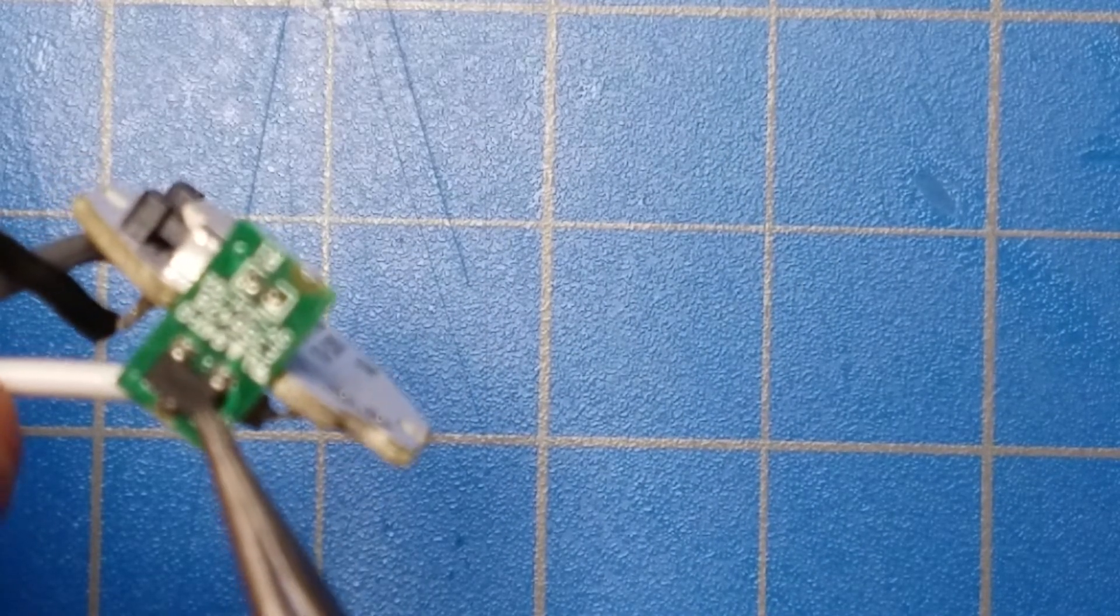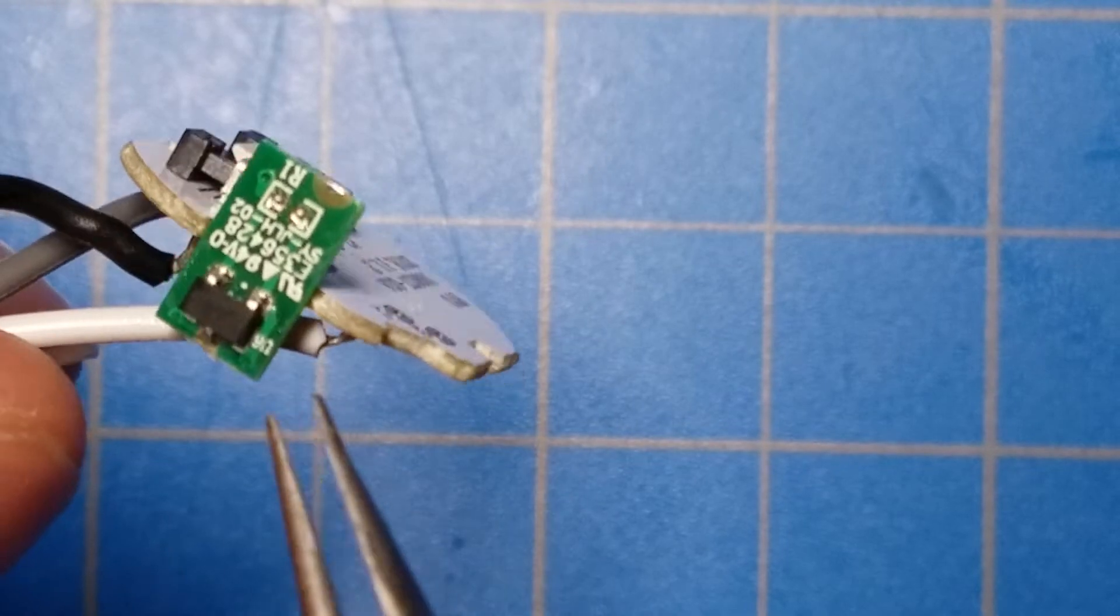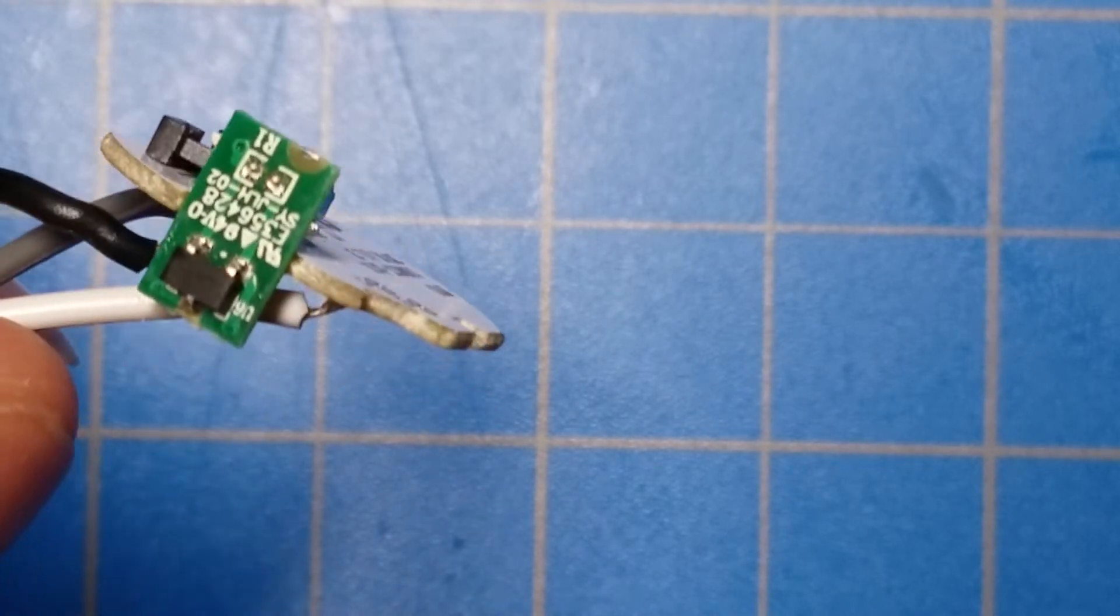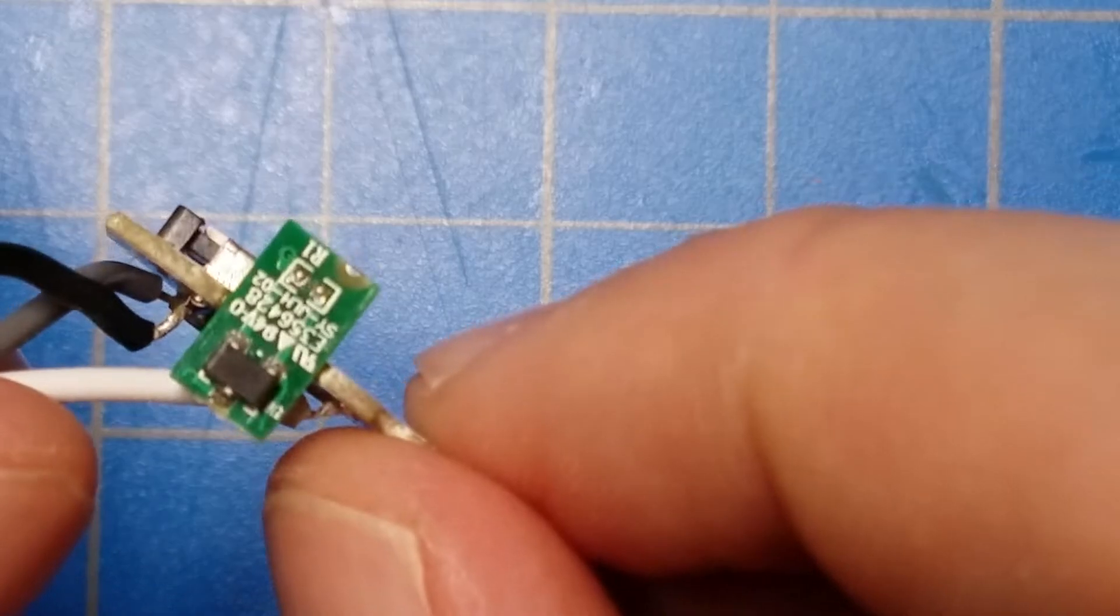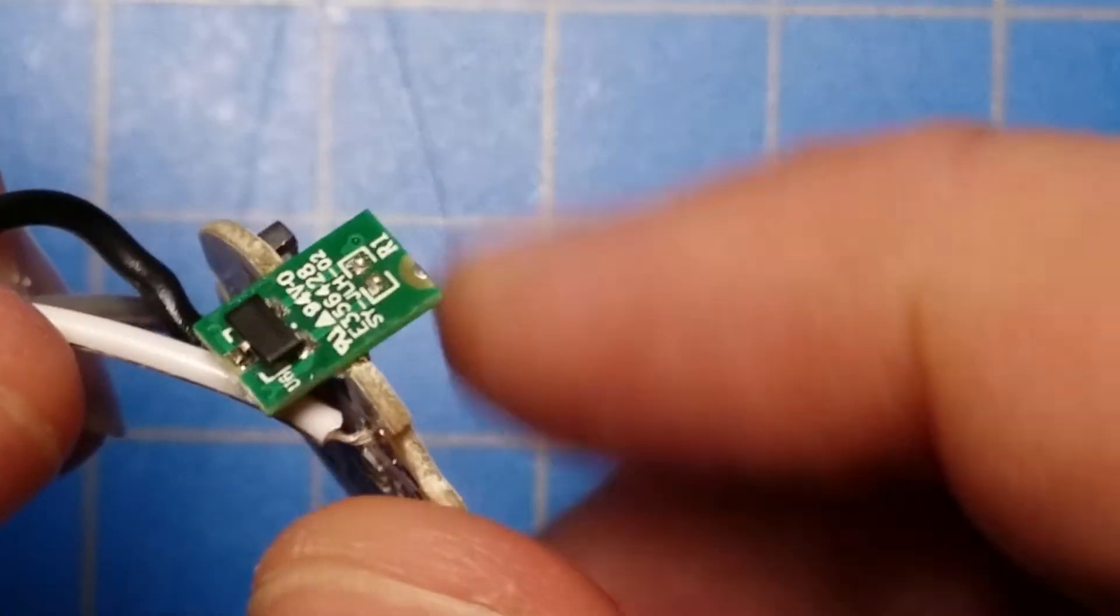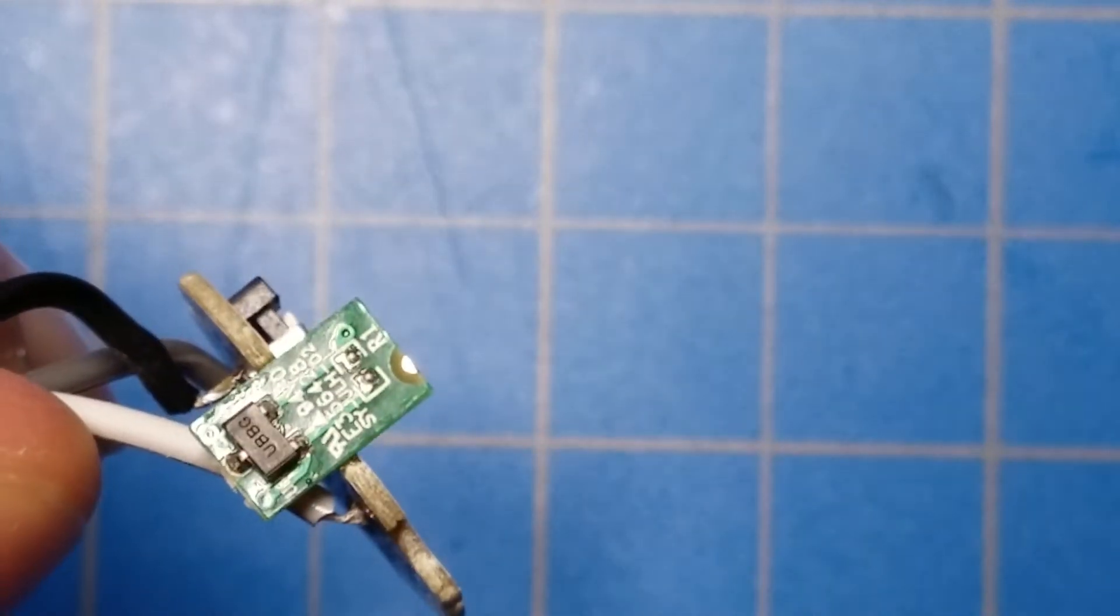This chip is probably the most interesting thing here. It is a Hall effect sensor. What a Hall effect sensor does is it detects the presence of a magnetic field and then it converts that